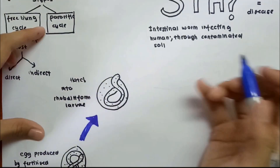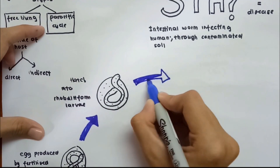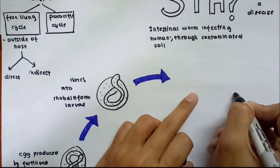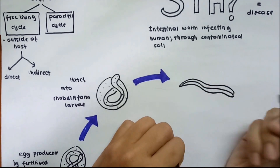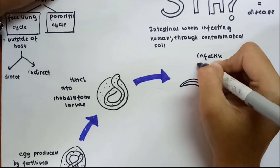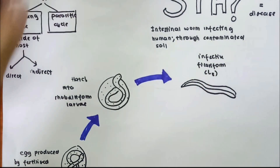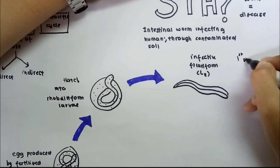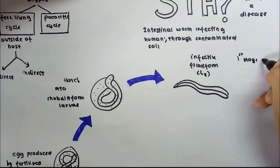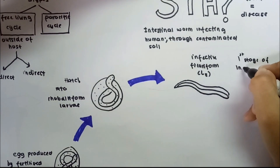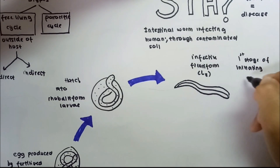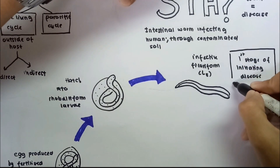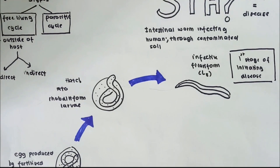The eggs undergo a hatching process, producing rhabditiform larvae. These rhabditiform larvae, produced from embryonated eggs, will develop into the L3 stage, also known as the filariform stage, of Strongyloides stercoralis. The filariform larvae, or L3 larvae, is the infective stage — the stage which first initiates infection in humans.